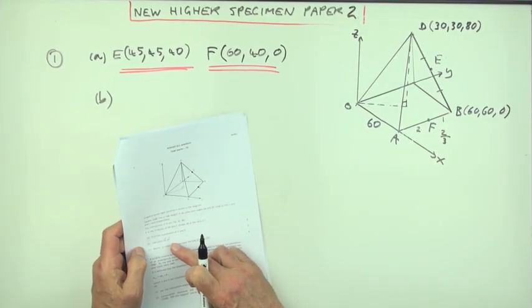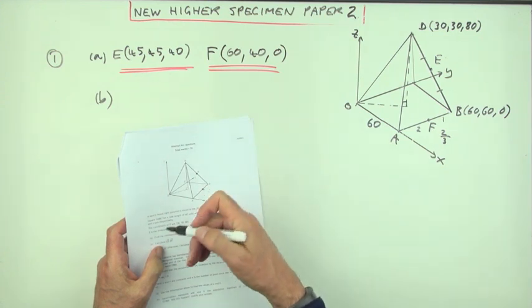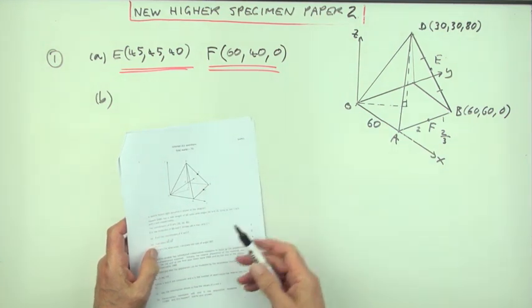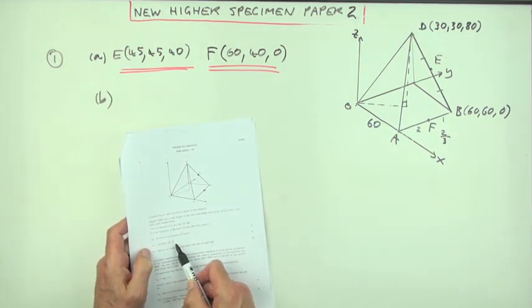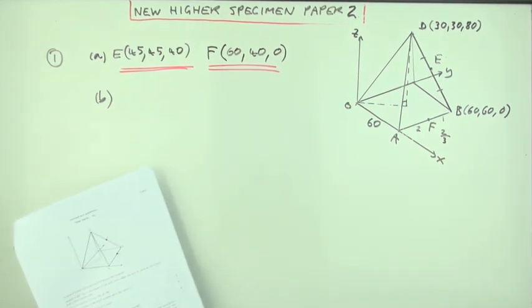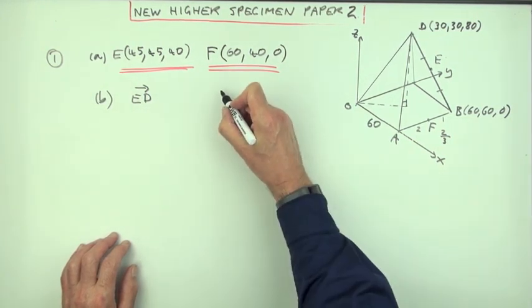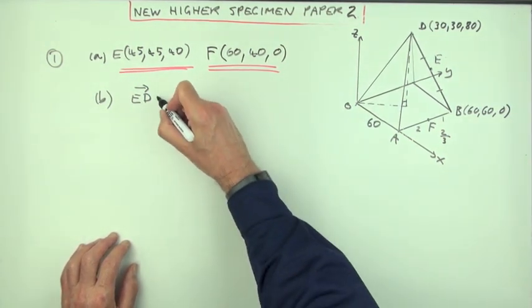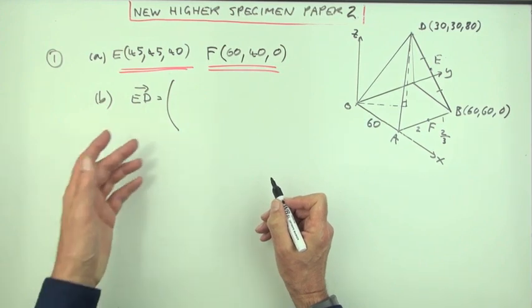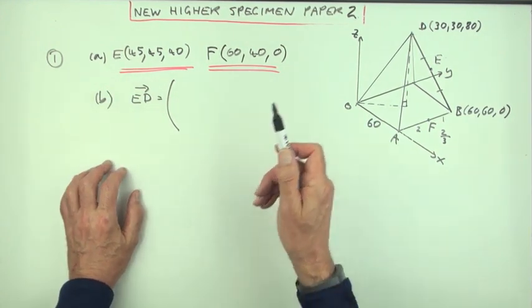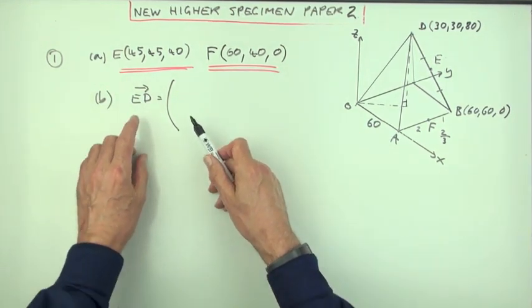So part B. Now, part B doesn't just say calculate the components of ED and the components of EF. It says find the scalar product of these two, still just for two marks. Well, that means there's only the one mark for getting the components of ED and getting the components of EF. Now, if that's the case, so they're only just like, what, half a mark each, although you don't get half marks, you'd as well just do it simply.